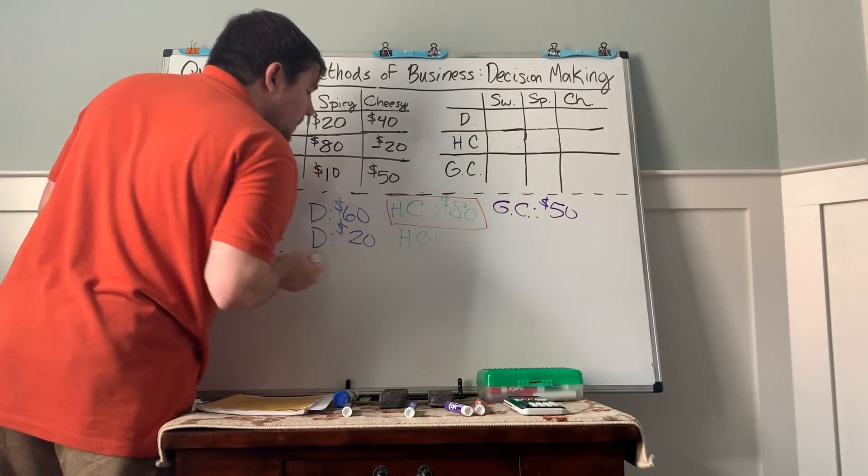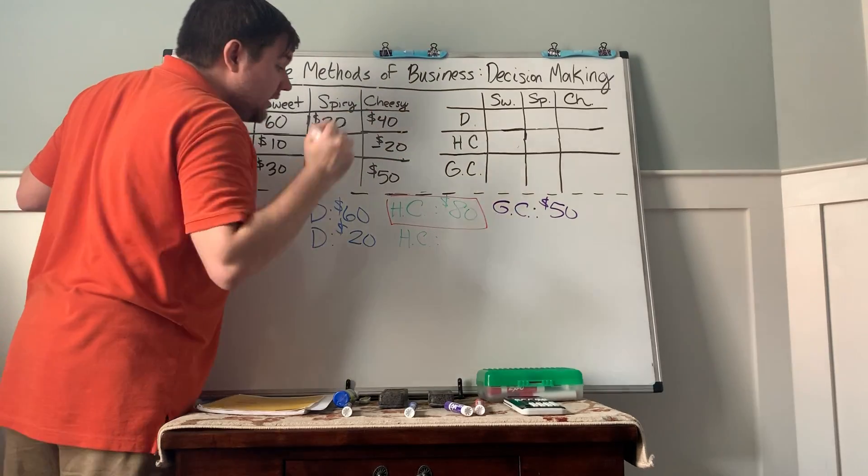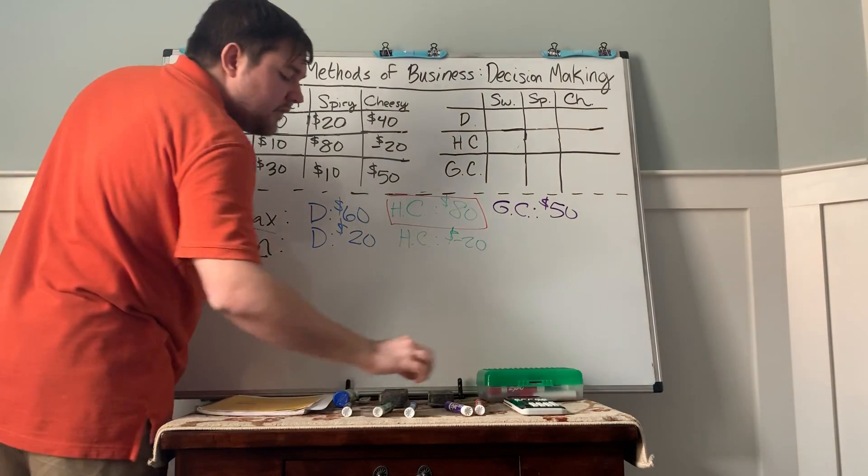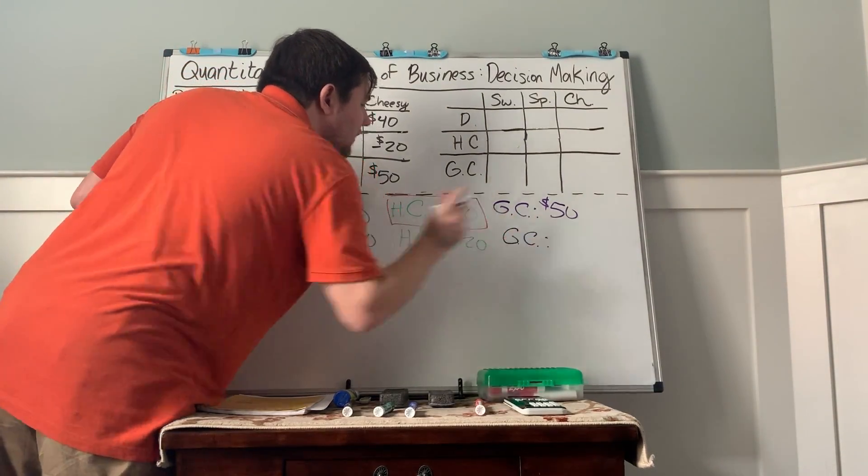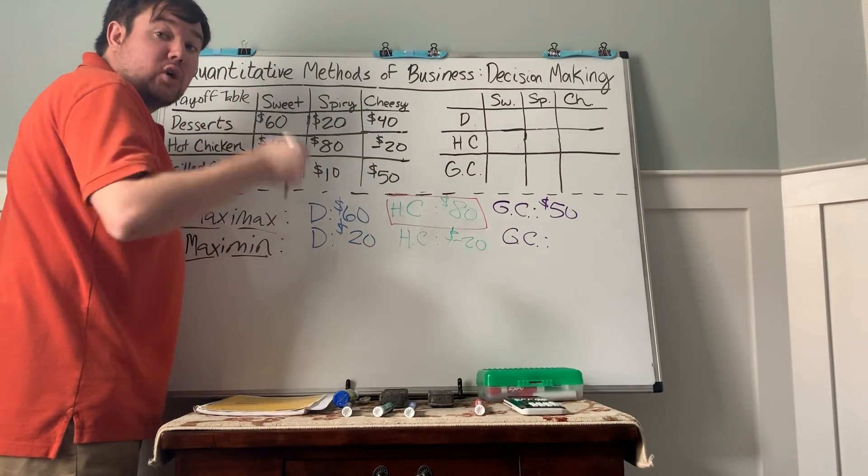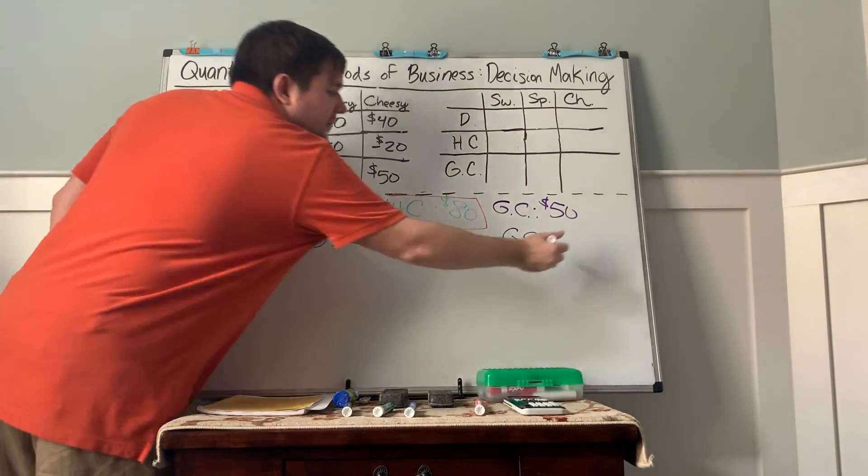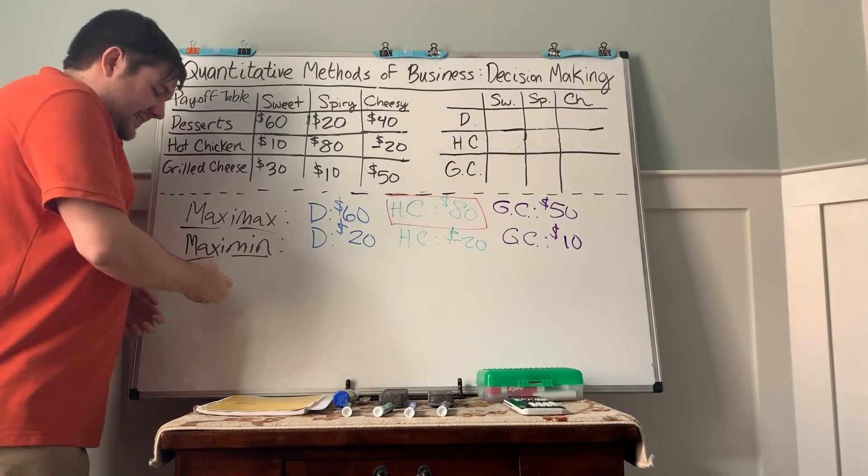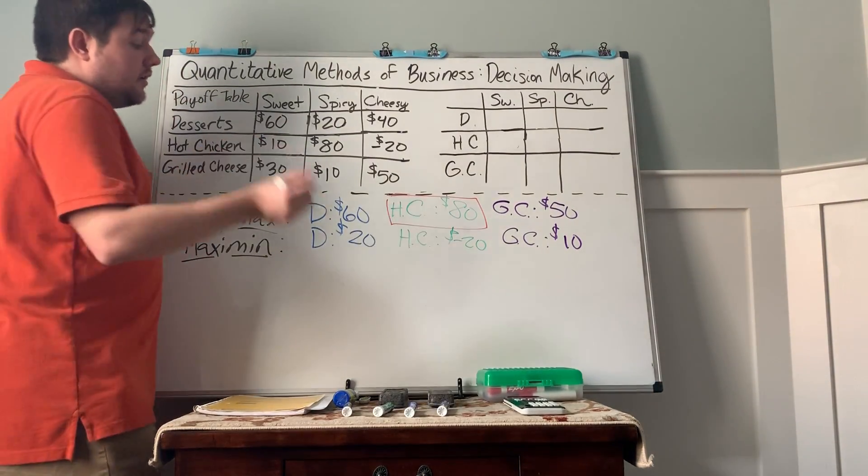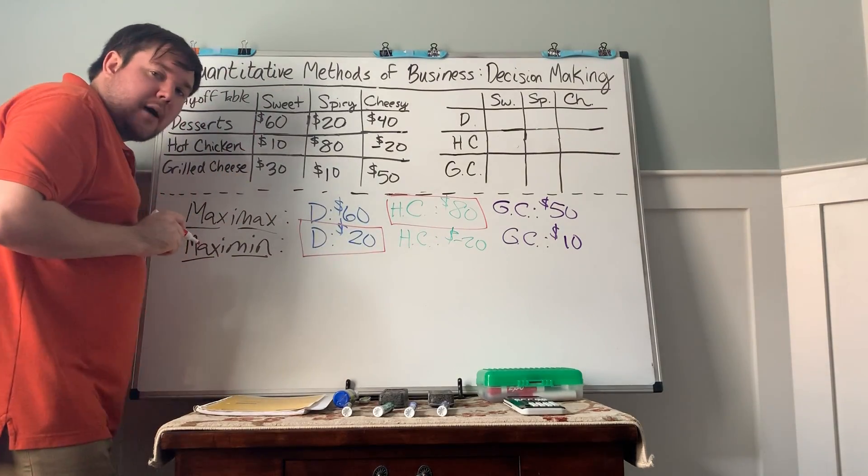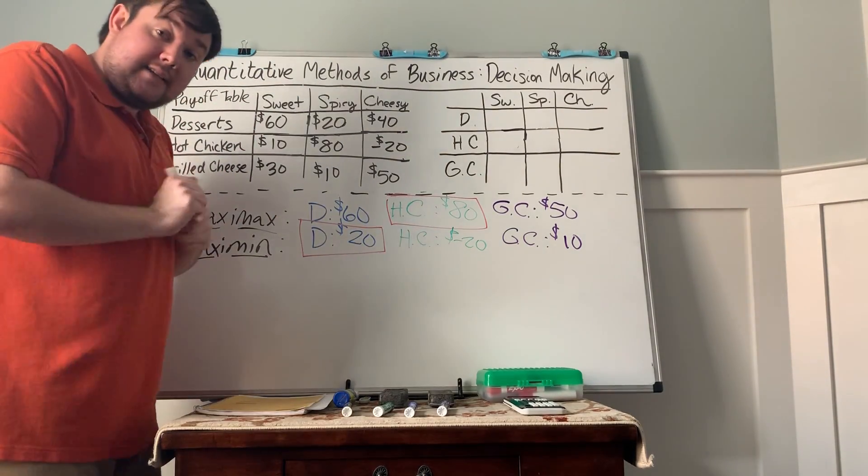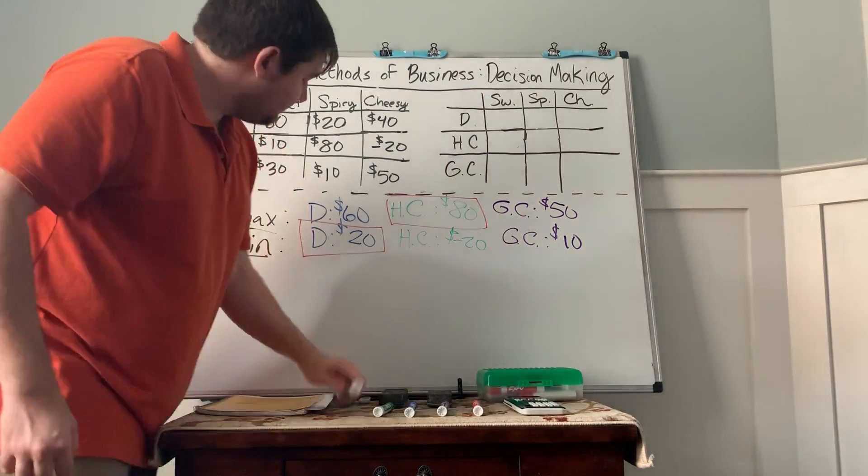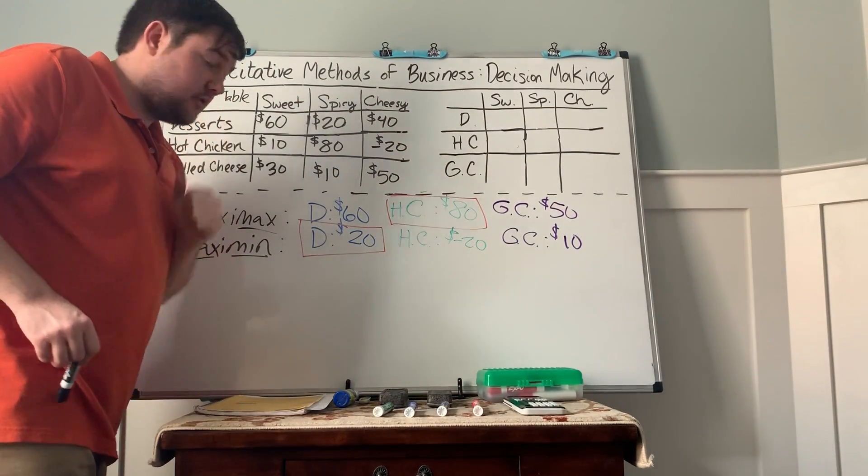If we go for hot chicken, we could have 10, 80, or negative 20. Worst case scenario, it's actually really bad. We're losing $20,000. And then grilled cheese, we're going to have 30, 10, and 50. Worst case scenario, we're only making $10,000. These are profits. We want to see big profits. So maximum, we want the dessert shop in that case. Worst case scenario in each of these, the best worst case scenario is the dessert shop.